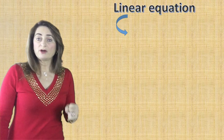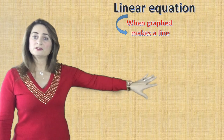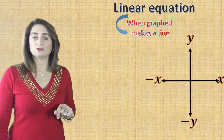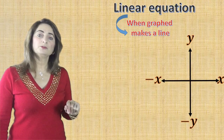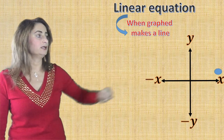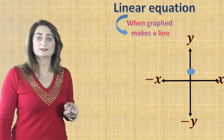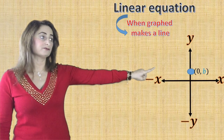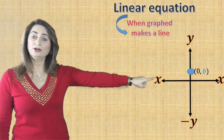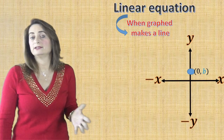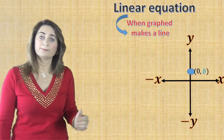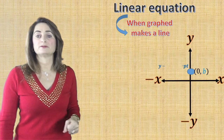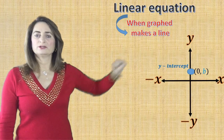We know that linear equations when graphed make a line. Here's a graph with coordinates. This time I am not going to start at zero, zero — I'm going to start with any point on the y-axis. The blue dot is on the y-axis, so x equals zero. The coordinates are (0, b), and we call that dot on the y-axis the y-intercept.